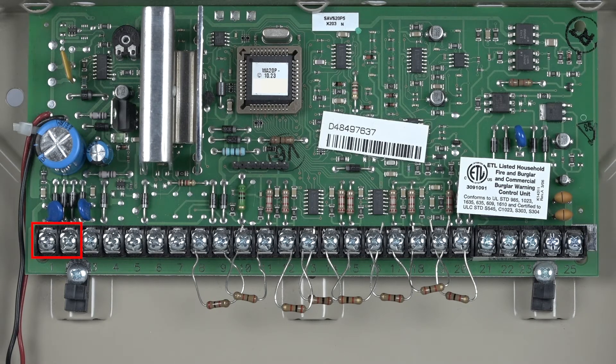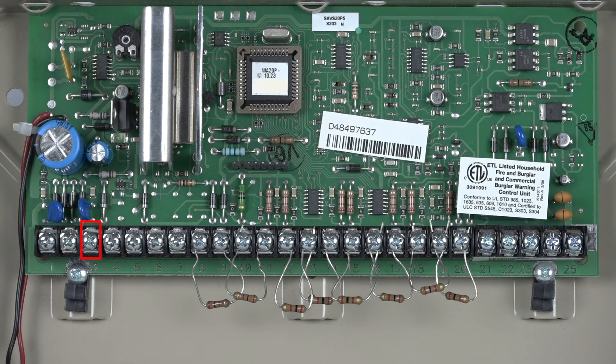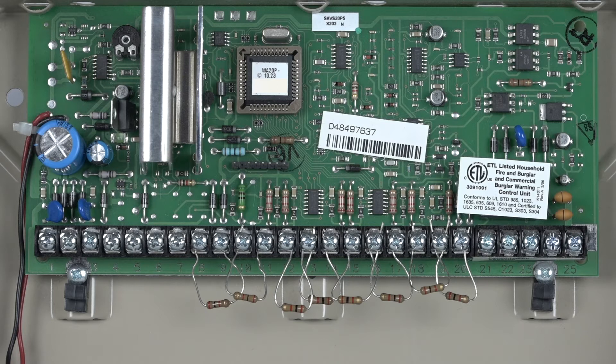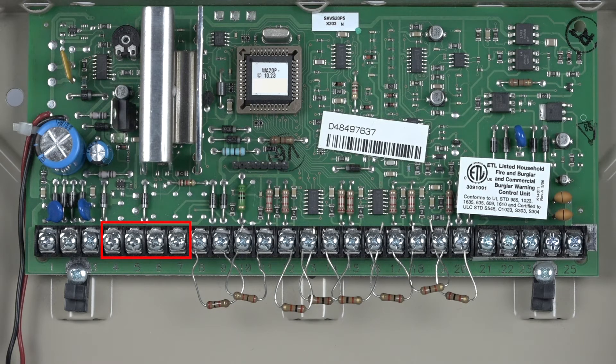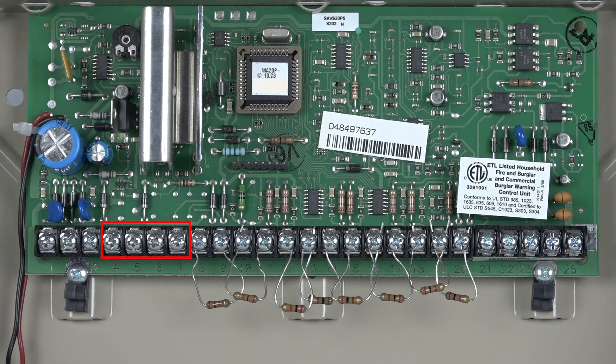Terminals 1 and 2 are for AC power. Terminal 3 is the positive connection for your bell. Terminals 4 through 7 is your ECP bus. This is where all ECP devices such as keypads, a radio, and a wireless receiver are connected.